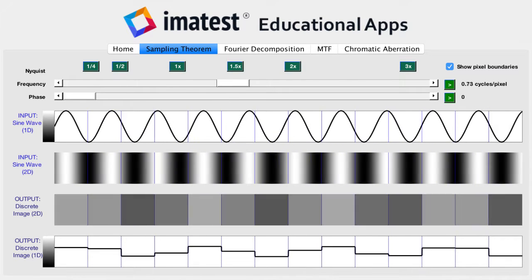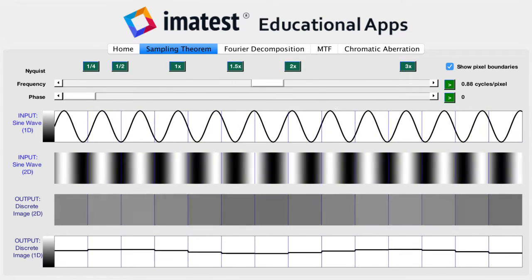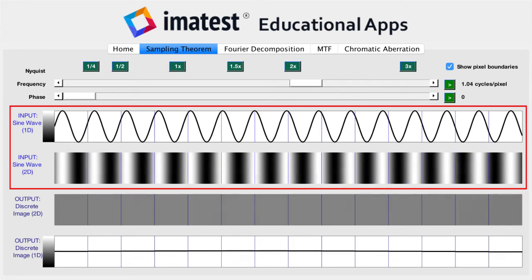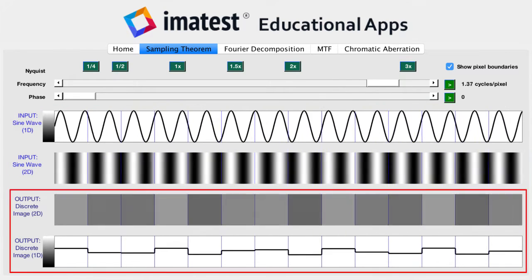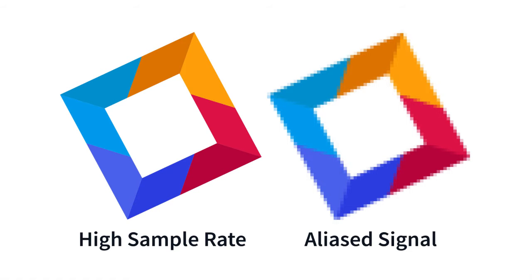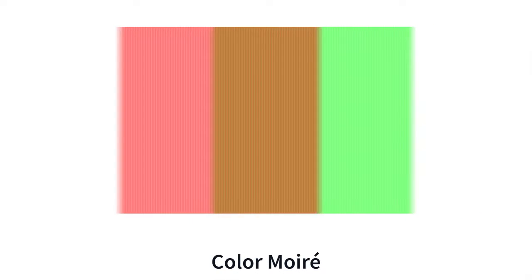At frequencies higher than Nyquist, information is aliased, meaning that high-frequency energy is misidentified as low-frequency energy. This can lead to undesirable effects such as jagged edges and color moiré.